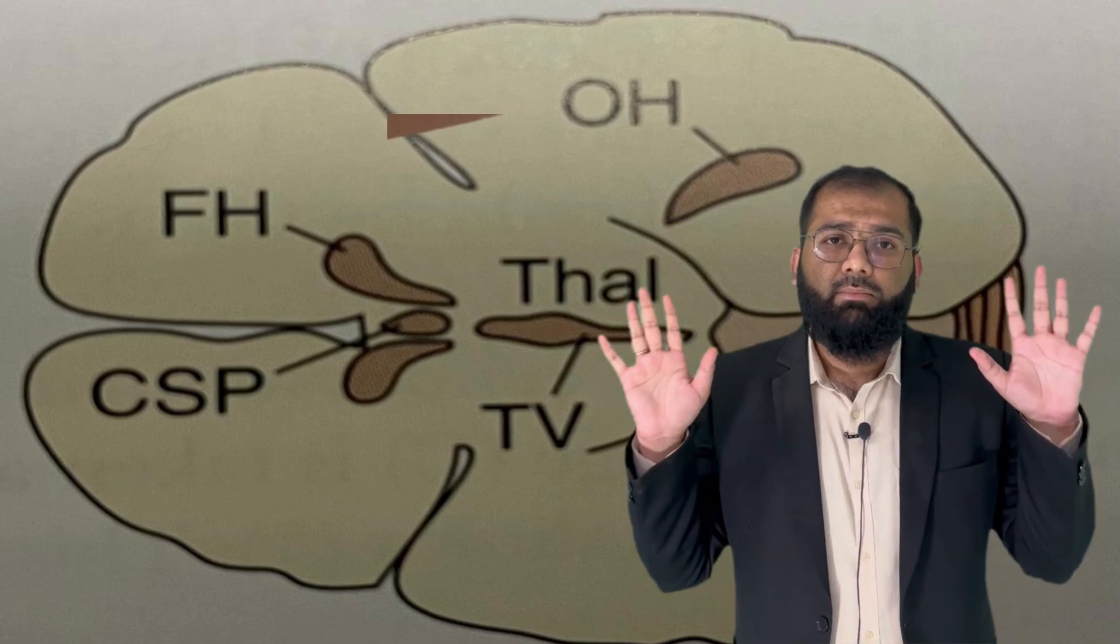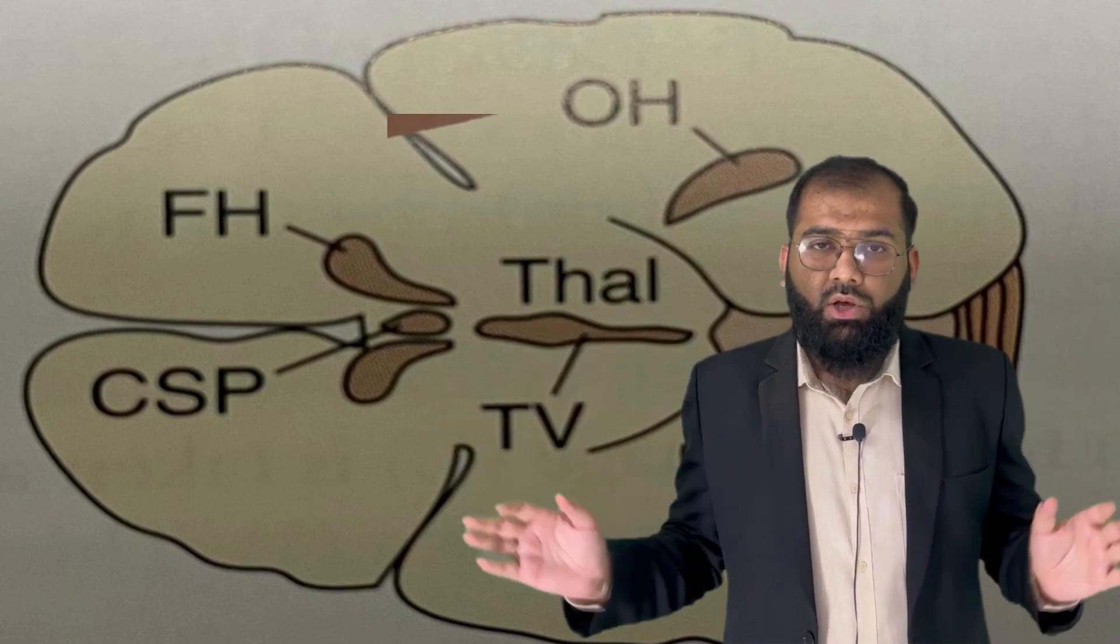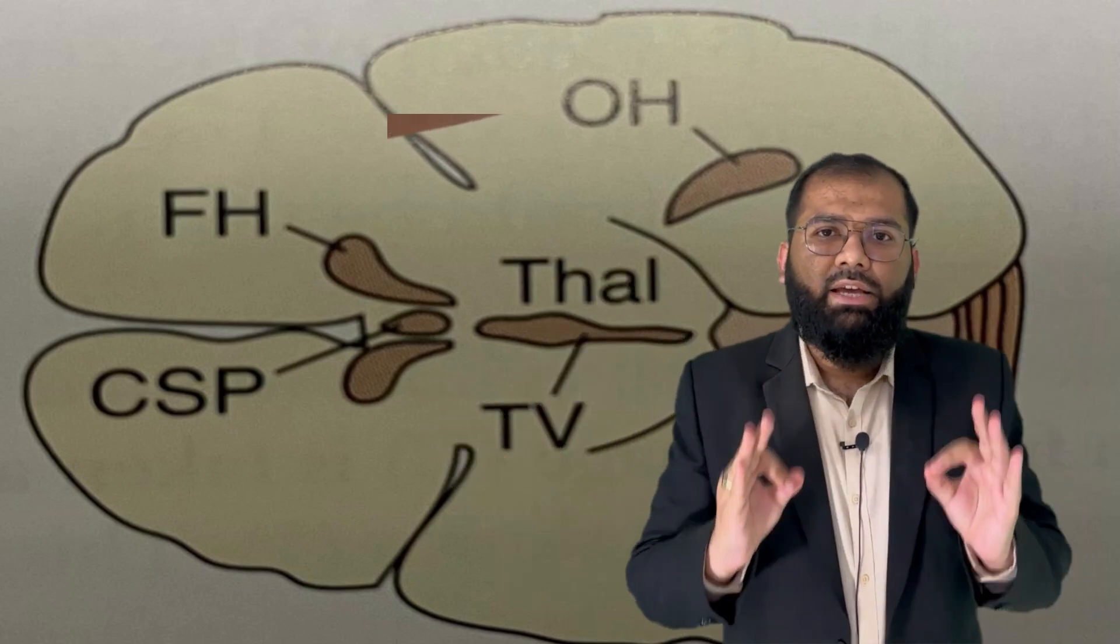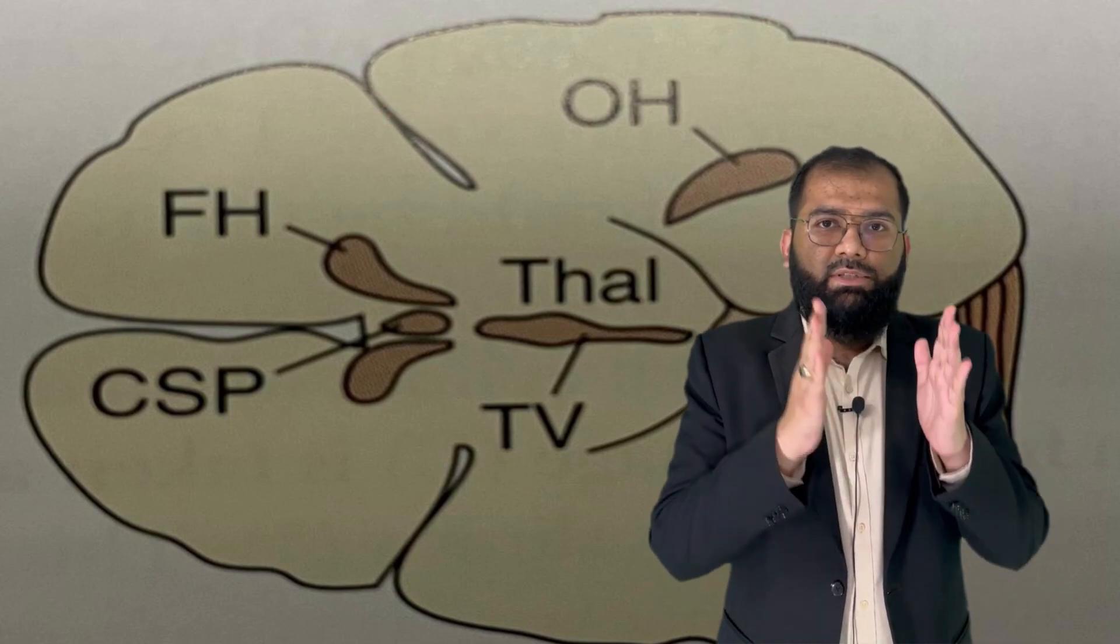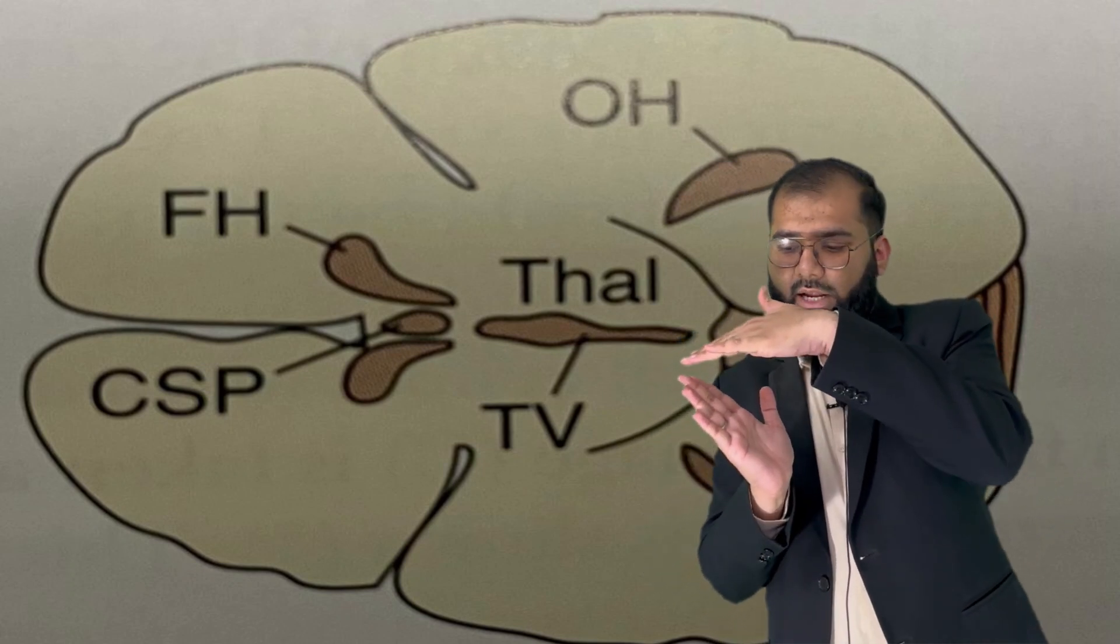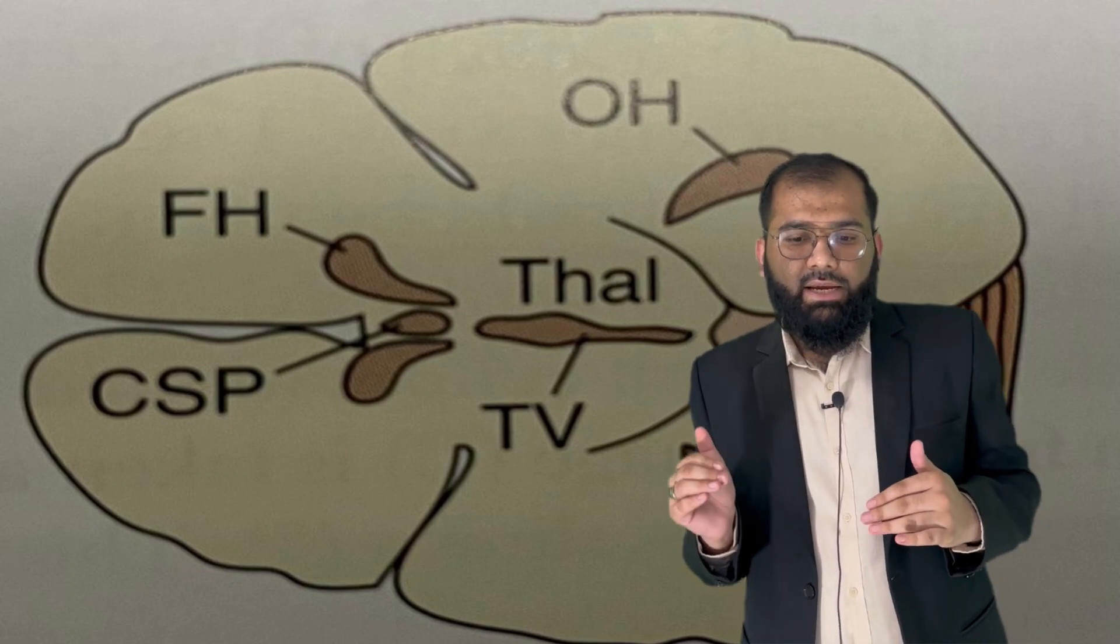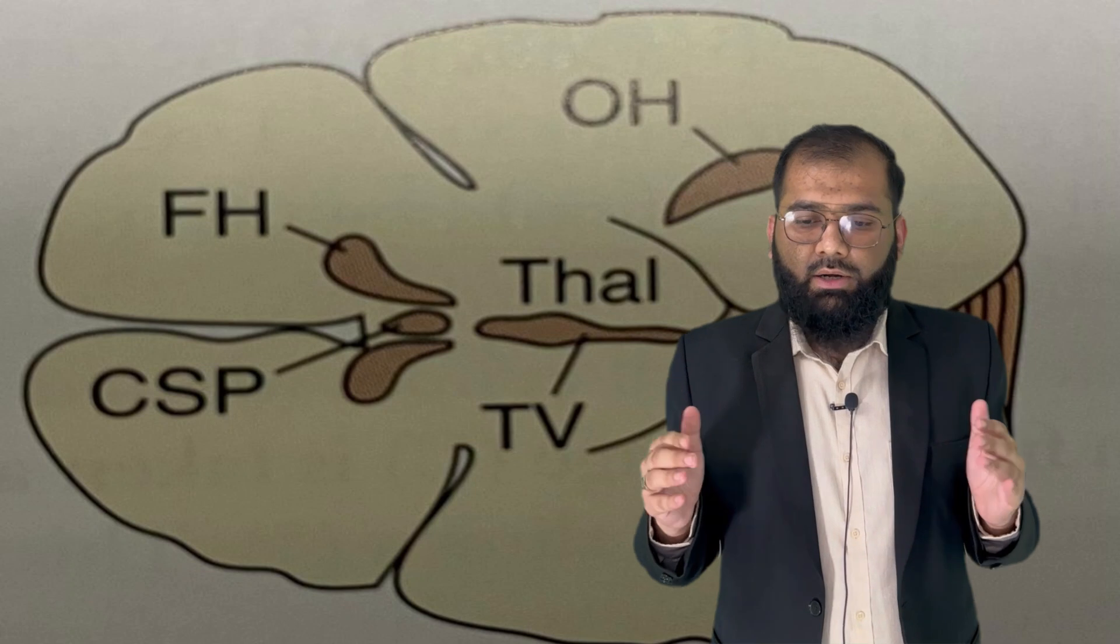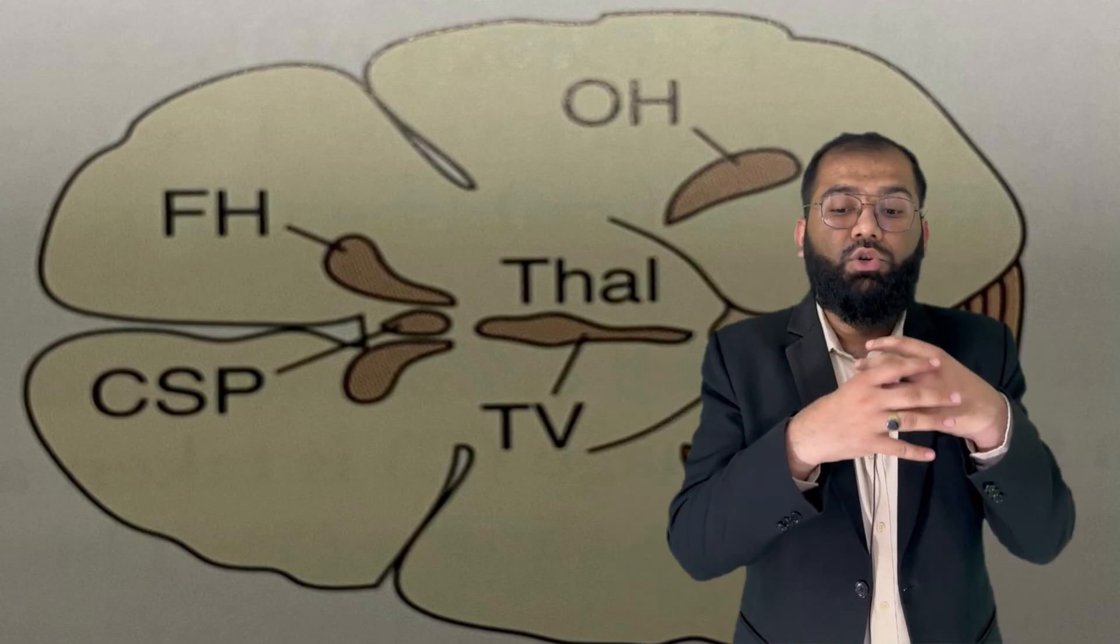Now why is this section important? When you want to take biparietal diameter, you have to achieve this section in which you see the cavum septum pellucidum and the two thalami pointing posteriorly, forming a posterior-pointing arrow towards the occipital side. Very importantly, we don't see much of the cerebellum, cerebellar lobes, or orbits.